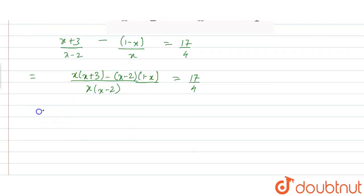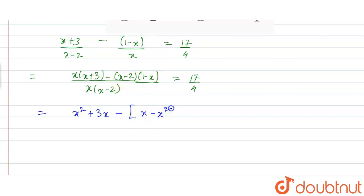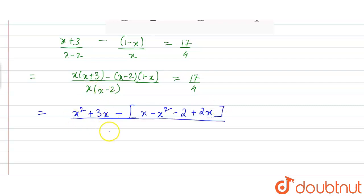Expanding the numerator: x² + 3x minus [x - x² - 2 + 2x] upon x² - 2x is equal to 17/4.